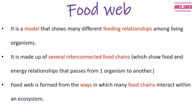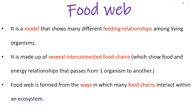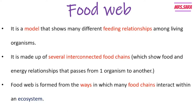The food web shows food and energy relationships — the flow that passes from one organism to another. A food chain shows the food relationship that passes from one organism to another, and also shows the energy relationships that pass from one organism to another. A food web is formed from the ways in which many food chains interact within the ecosystem.